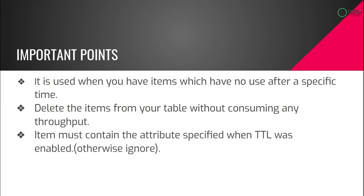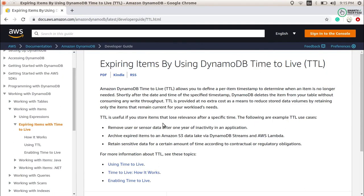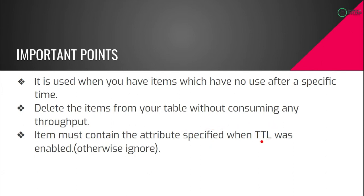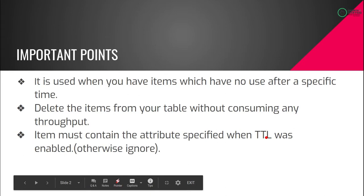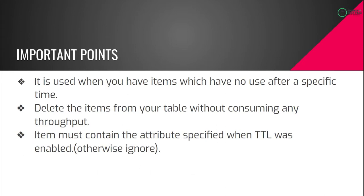The third point is: when you are configuring the TTL, you must define an attribute name on which the TTL should occur. I have taken all the points from the DynamoDB documentation given by Amazon. If you have enabled TTL on a table but the attribute on which you are defining the TTL is not present in that row, it will ignore the TTL process for that item.